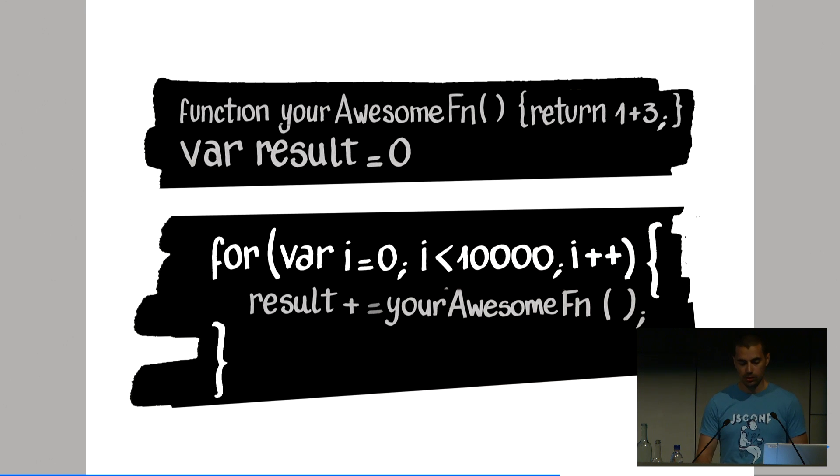Now, you may be wondering why it should be faster since it's the same code. In low-level programming languages, like assembly, calling a function would end up in a context switch. Basically, after the function call, you will have to save the previous context. And right after you return from the function, you will have to resume that saved context.